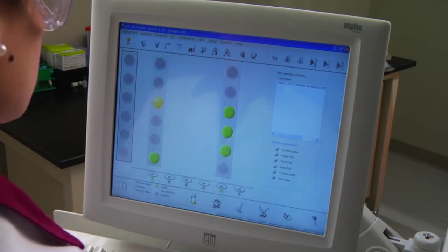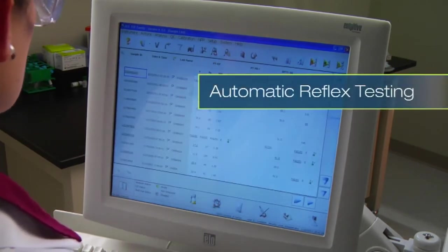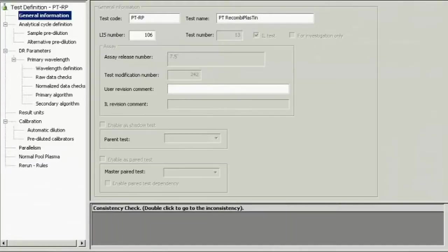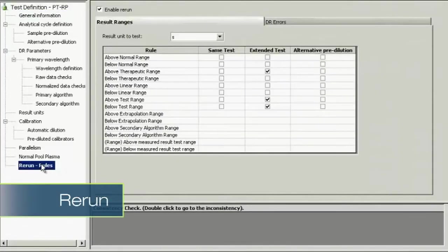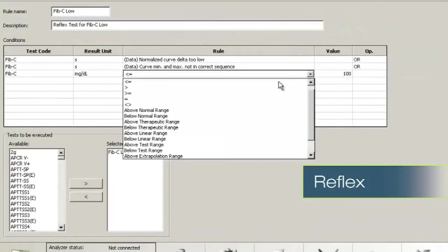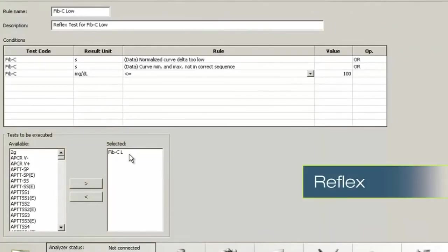Both rerun and reflex testing are automated based on operator defined parameters. For rerun, a test is repeated if an initial result falls outside the specified range. For reflex, one or more additional tests are performed automatically when results meet criteria established by the operator.